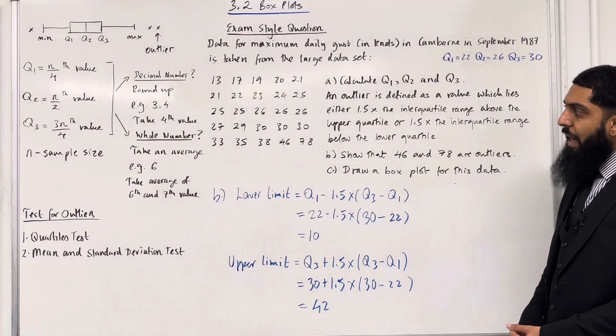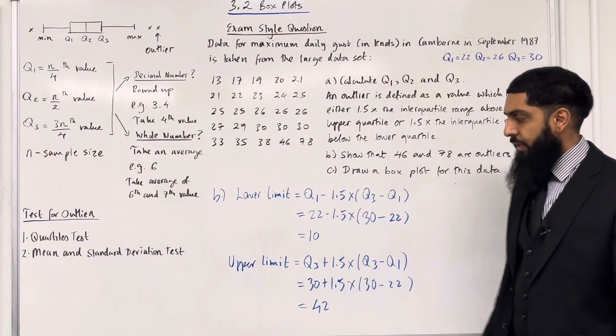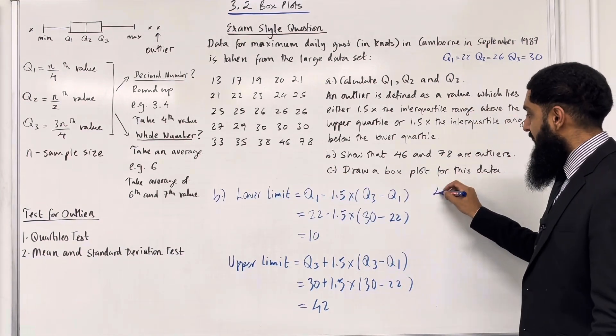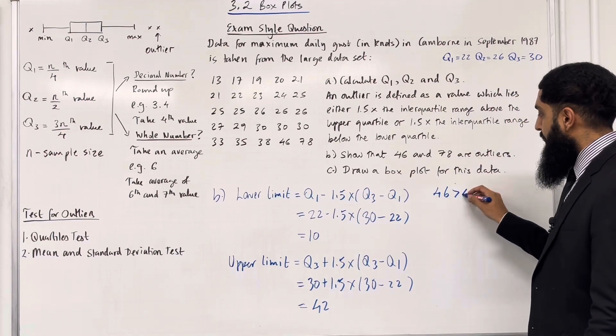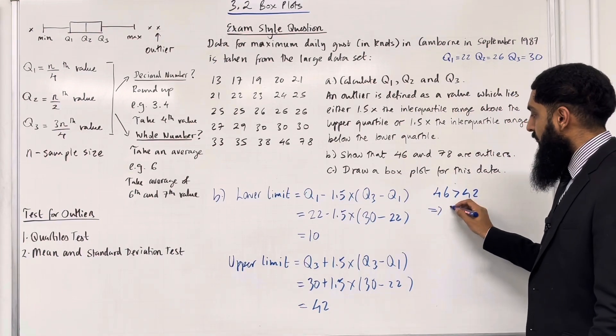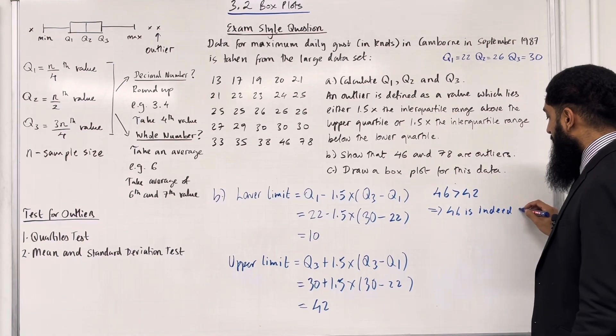Now if we go back to the data values, we're trying to show that 46 and 78 are outliers. First, 46 is more than the upper limit of 42, which implies that 46 is indeed an outlier.